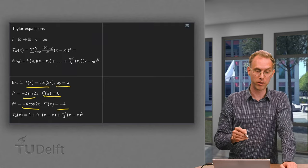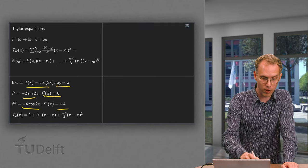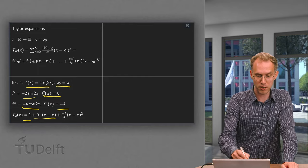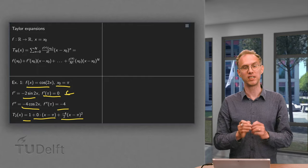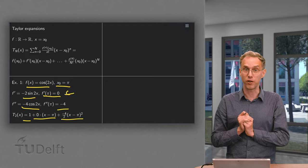f'' equals -4 times the cosine of 2x. So at π we get -4. So the second order Taylor polynomial for this function would be 1 plus 0 times (x - π) plus -4 over 2 times (x - π) squared. So that's for a function of one variable.